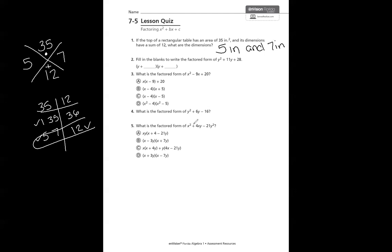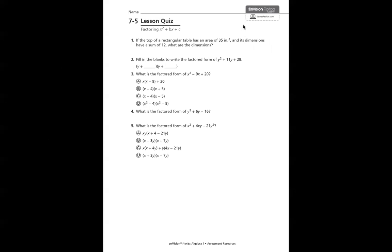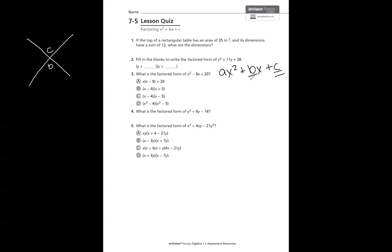We're going to continue using what's called the x factor method for the rest of these problems, just taking it one step further. In number 2, we're filling in the blanks to write the factored form of y squared plus 11y plus 28 as two binomials. When factoring — breaking a trinomial into two binomials — you're always going to use your X. Put c on top and b on the bottom, since we always have ax squared plus bx plus c. We're looking for two numbers that multiply to give c and add to give b.